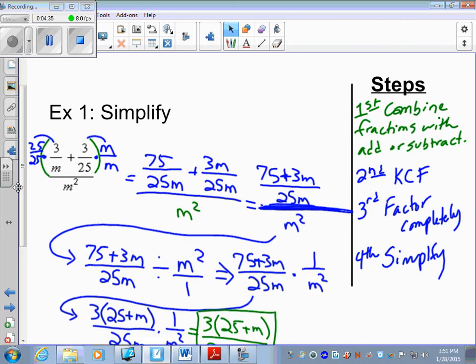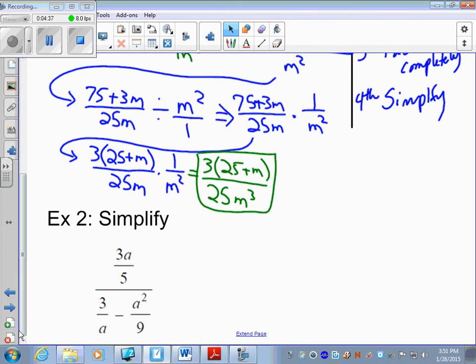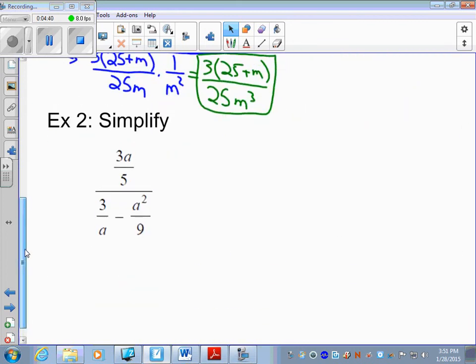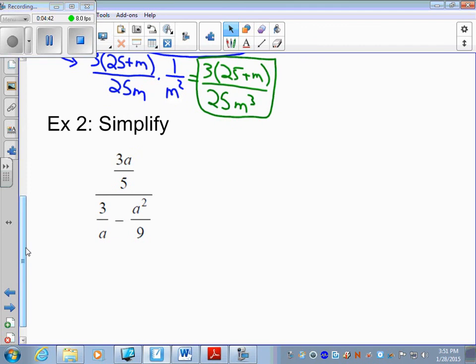Moving on. Example 2. Here again, I'm looking for the first thing: combine fractions with addition or subtraction. I see a subtraction in the denominator. So I'm just concentrating on the red, what I circled there. I need to get those fractions together.